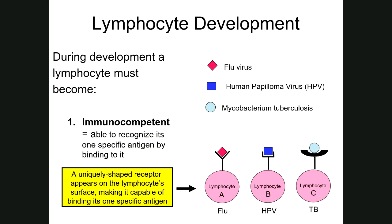A lymphocyte, whether it's a B cell or a T cell, while it's developing and maturing in either the thymus or the bone marrow, has to become capable of doing a couple of different things. The first thing we need a maturing lymphocyte to do is to become what's known as immunocompetent. Immunocompetent means that the cell is able to recognize its one specific antigen by binding to it.